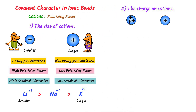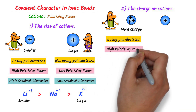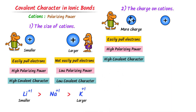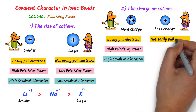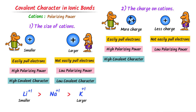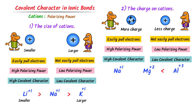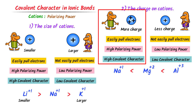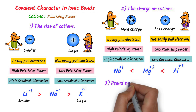A cation with more positive charge will pull more electrons of the anion — its polarizing power is high and it has more covalent character. A cation with less positive charge will have low polarizing power and less covalent character. For example, among Al³⁺, Mg²⁺, and Na⁺: aluminum has a +3 charge and sodium has a +1 charge. So aluminum has more covalent character than magnesium, and magnesium has more covalent character than sodium. Thus, the greater the charge on a cation, the greater the polarizing power and covalent character.